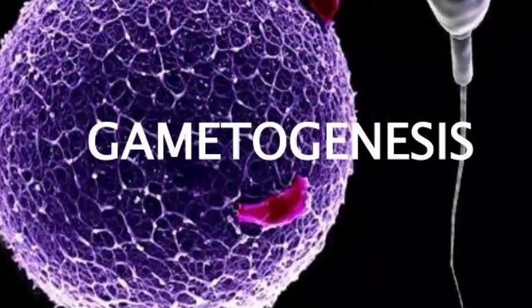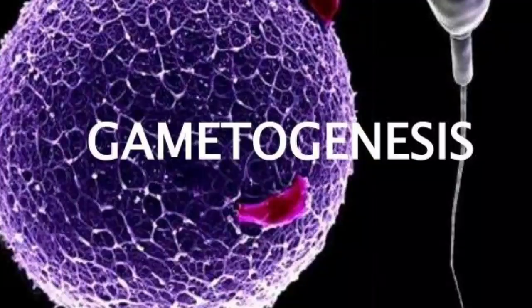What actually happens before fertilization? There are two types of important events which occur in pre-fertilization. The two important events are gametogenesis and gamete transfer. Gametogenesis — 'gameto' means gamete, 'genesis' means formation — so as the name suggests, gametogenesis is nothing but the formation of gametes.